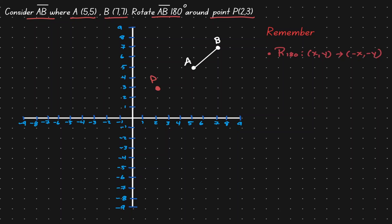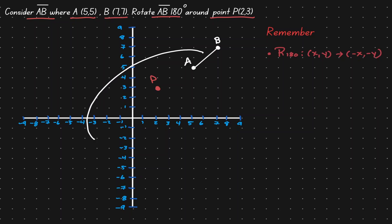Let's visualize what we want to do. This line segment AB — we need to go around P, but we don't want to do a full circle. We're just going to go around 180 degrees. But let's not forget that we have a rule whenever we want to rotate 180 degrees: given any coordinate point (x, y), after a rotation of 180 degrees, we obtain the coordinate point (negative x, negative y).